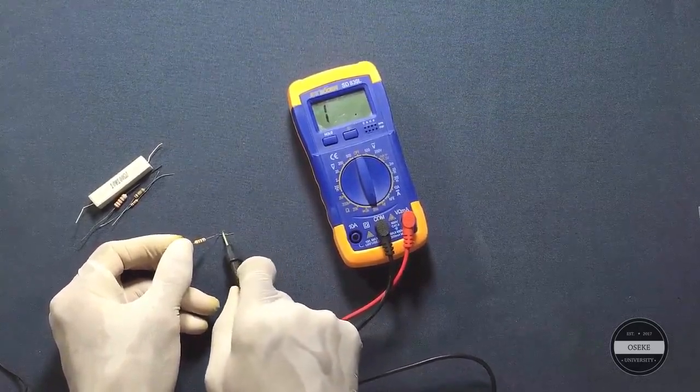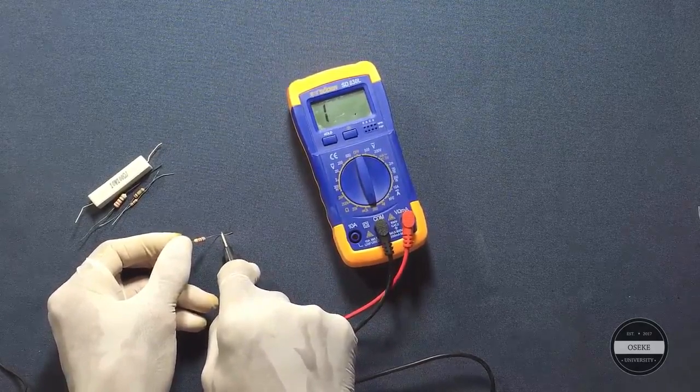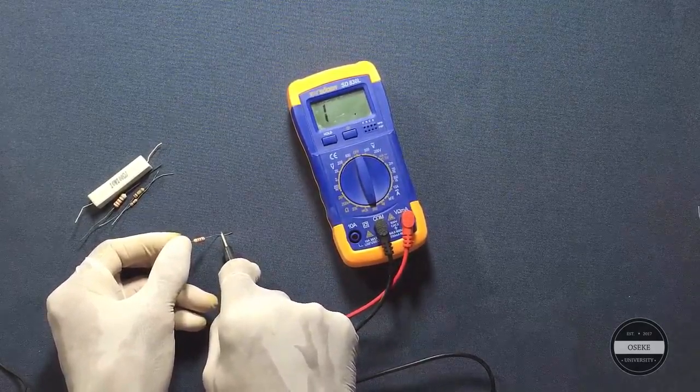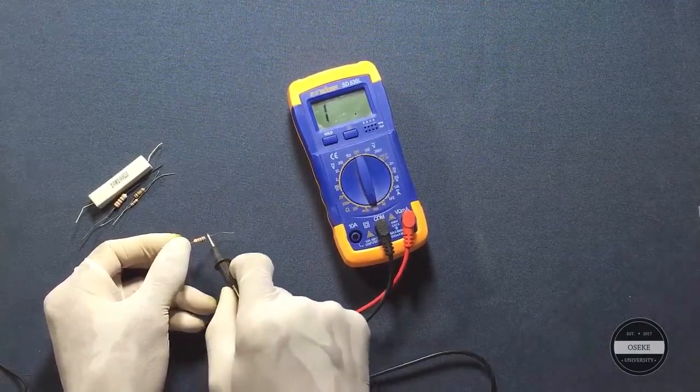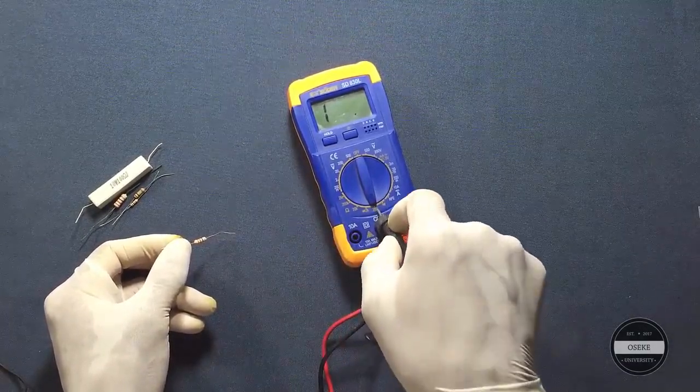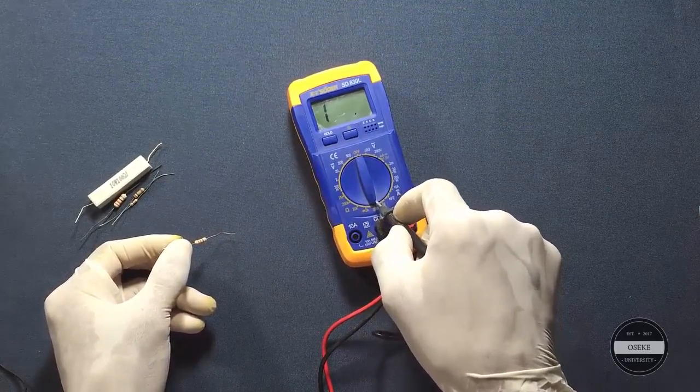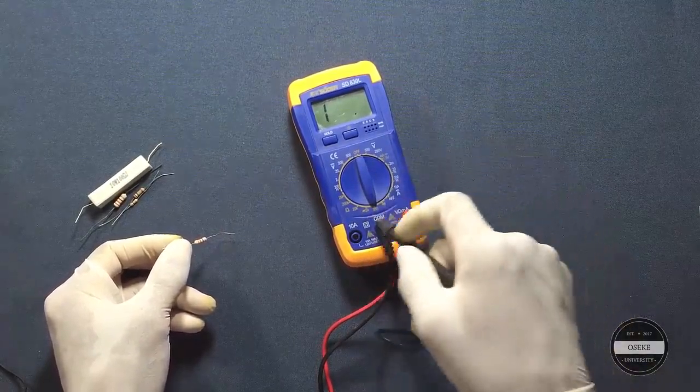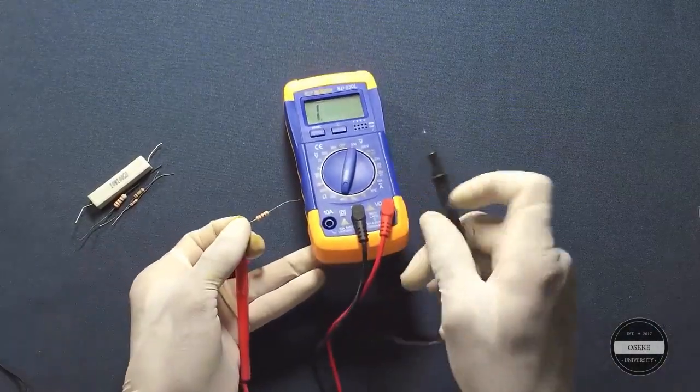Yet nothing happens, it's still showing one. What this means is simple: this resistor's resistance is greater than the selected range here. So next thing to do is to take it up a little, so I'm going to shift it to two kilo ohms.